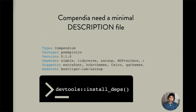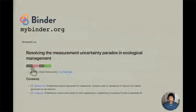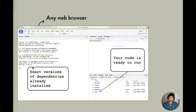This is where Binder comes in. Binder is an open source project that makes it really easy to share analyses in any type of notebook. My Binder is one instance of that project — there can be many instances. If you enable Binder on a collection of code and add a badge to your GitHub repository, anyone can click that badge and be dropped into an RStudio Server in their browser. All dependencies are already installed and the code is ready to run — no local installation required.